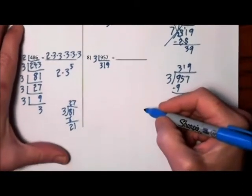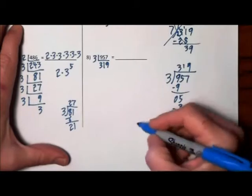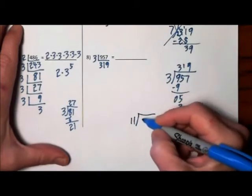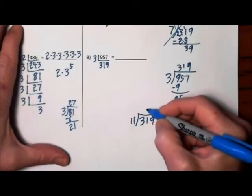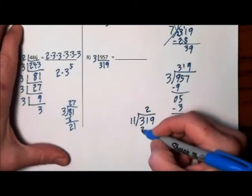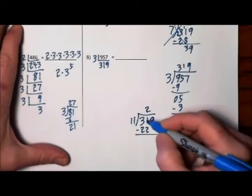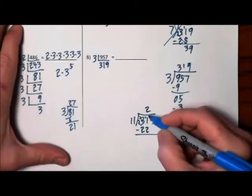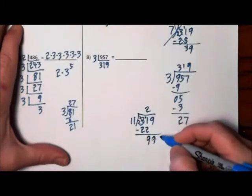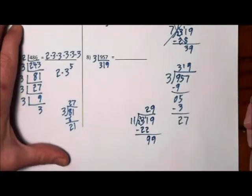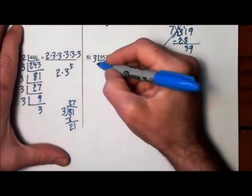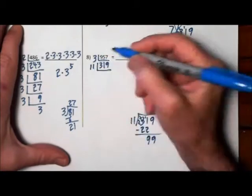We're going to try 11. So let's give ourselves a little more room. 11 goes into 31 twice. That would be 99. And 11 goes into 99, 9 times. So the next thing we'll divide in with is 11.